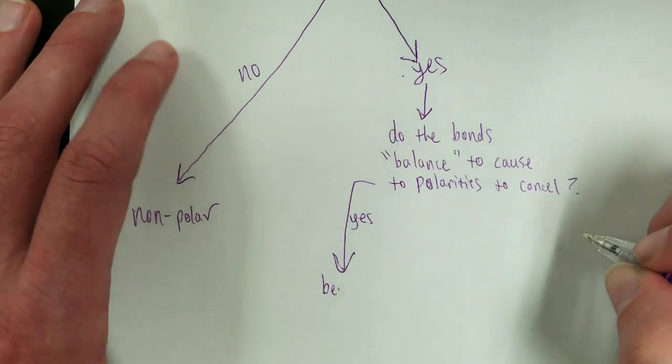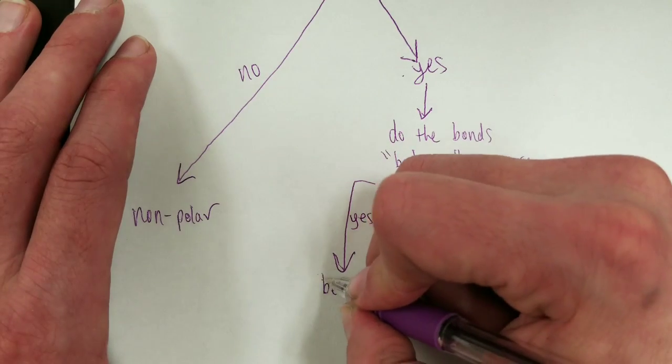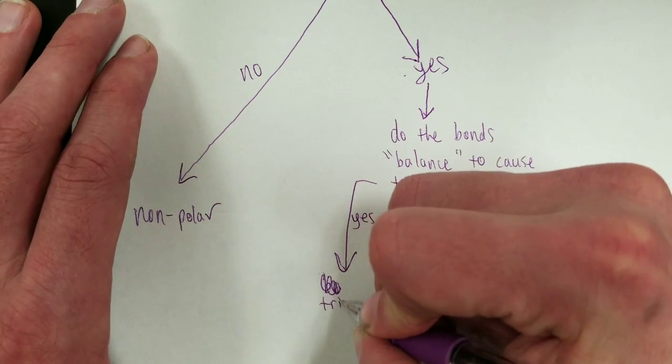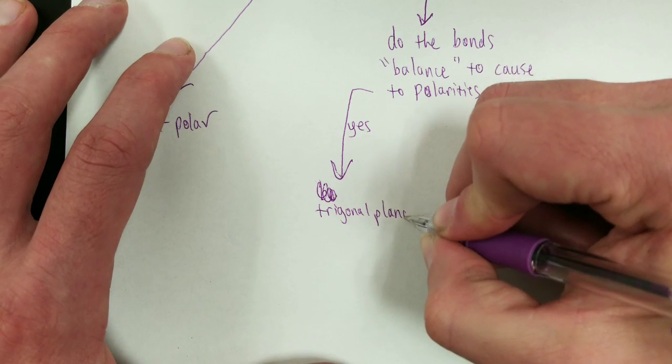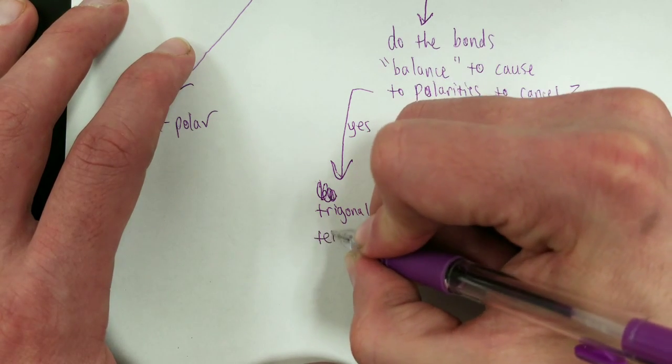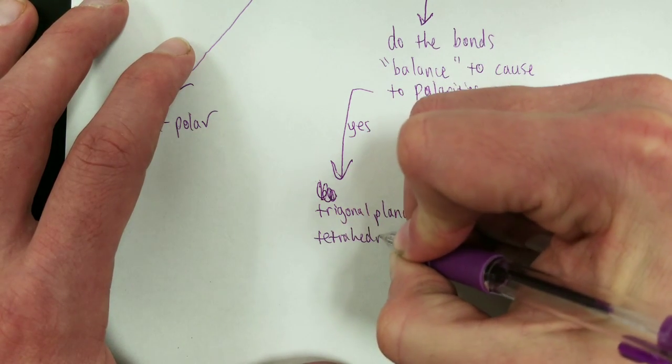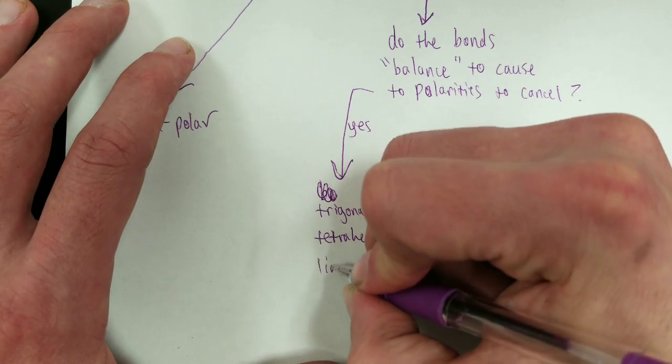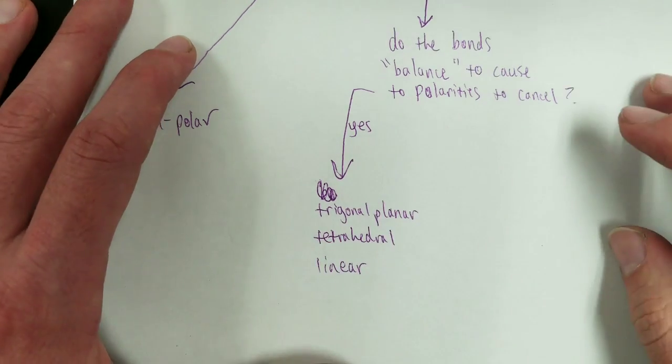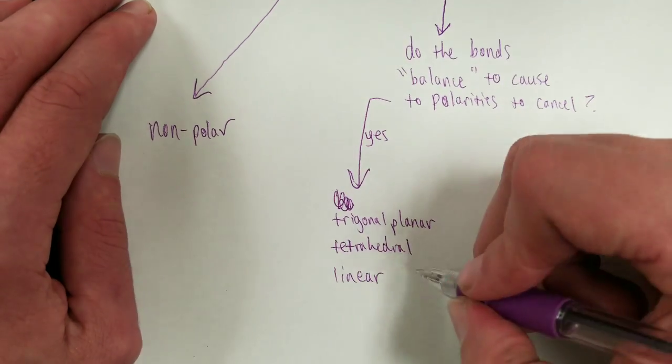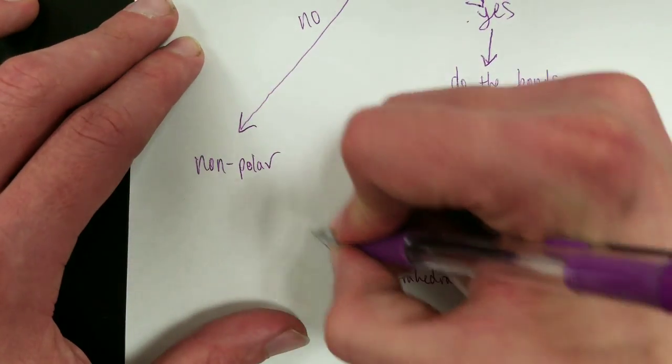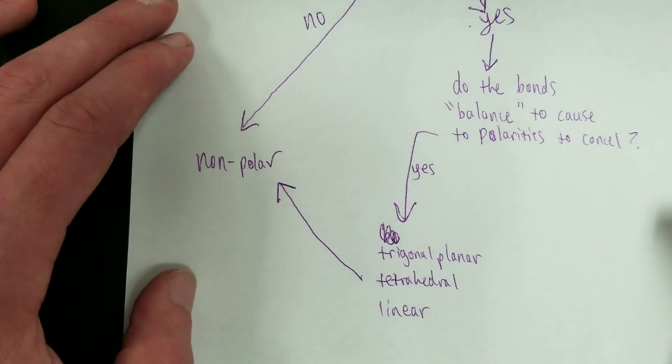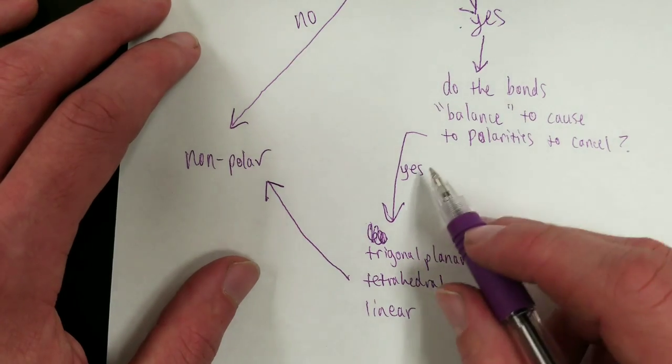This means either trigonal planar, tetrahedral, or linear molecular geometry. This will result in a non-polar molecule if they successfully cancel out their polarity.